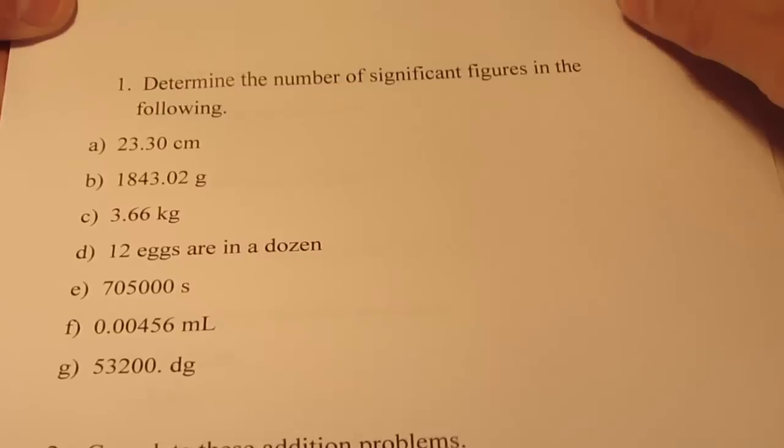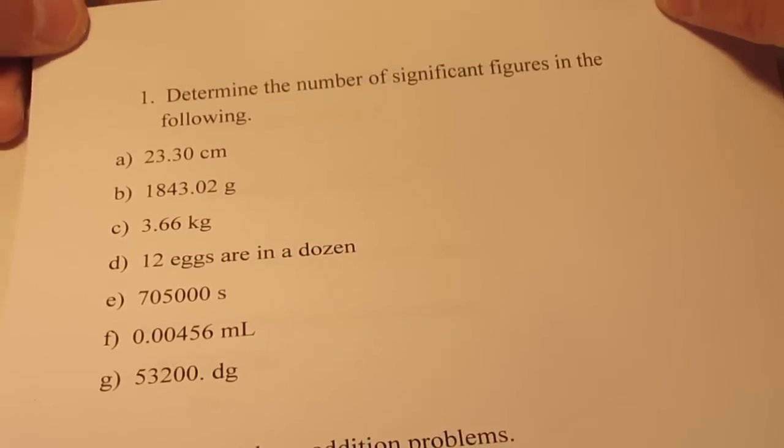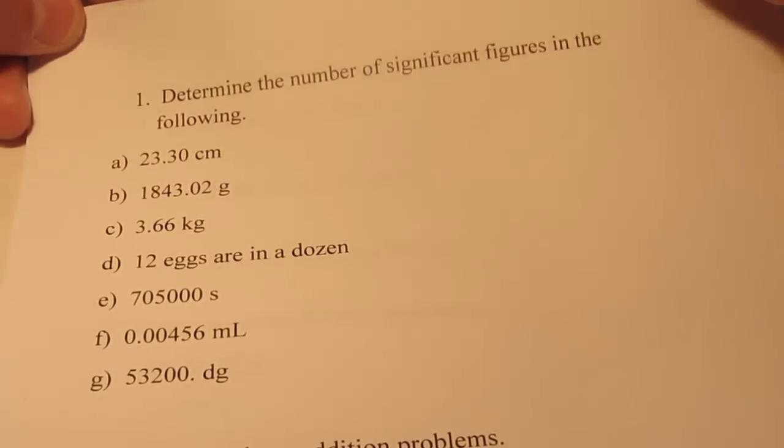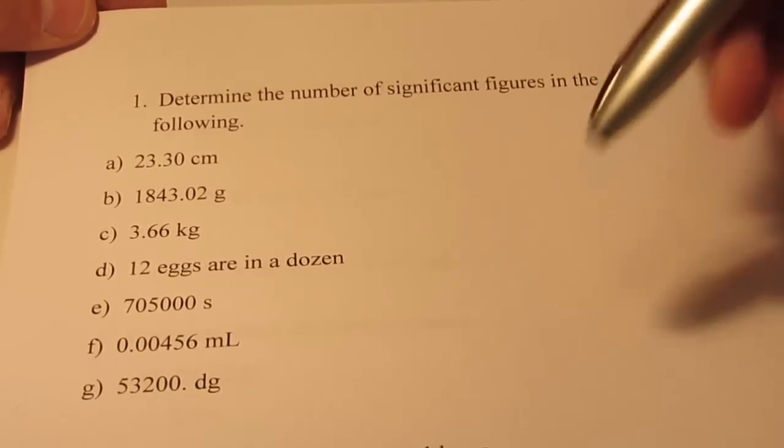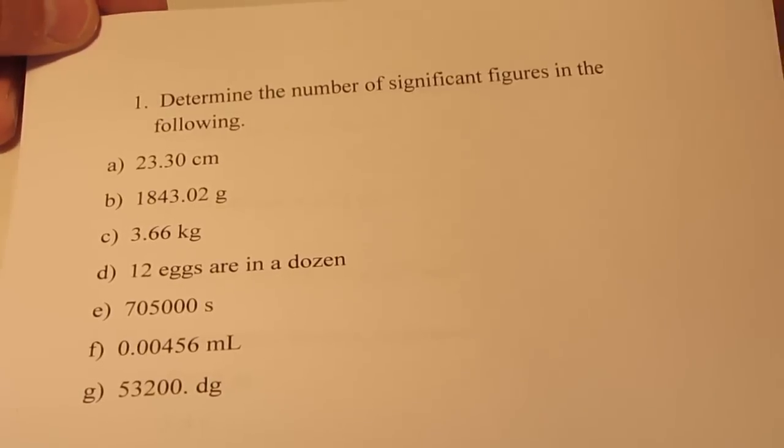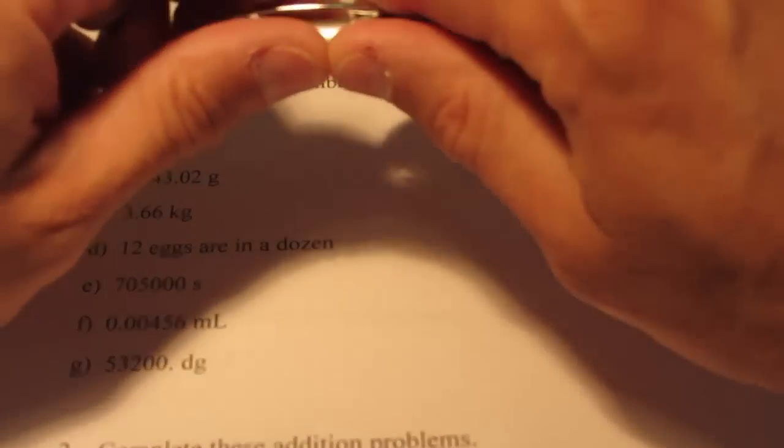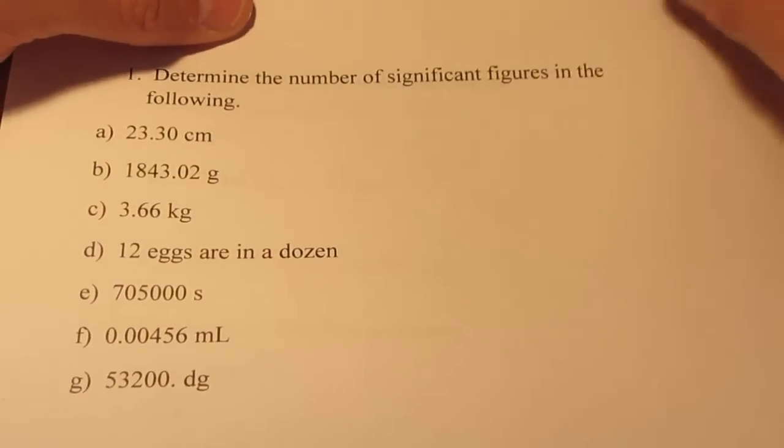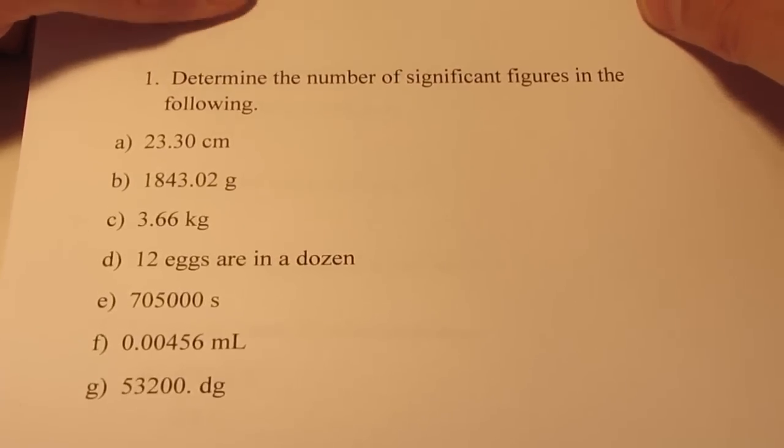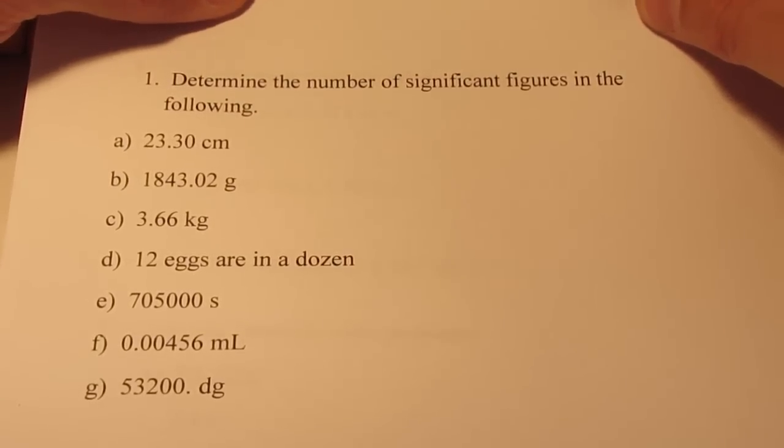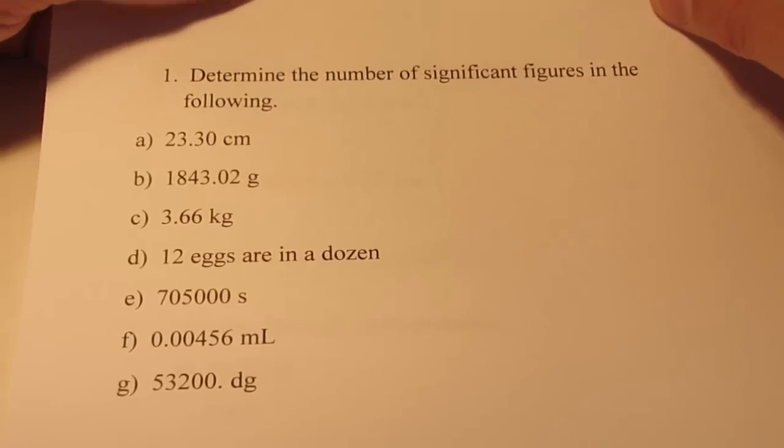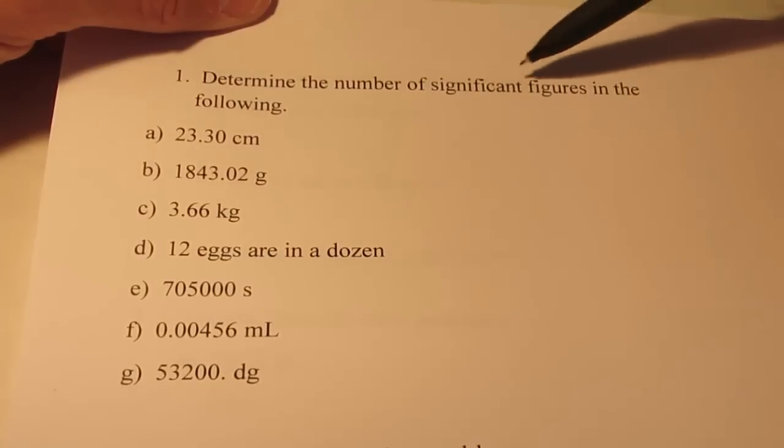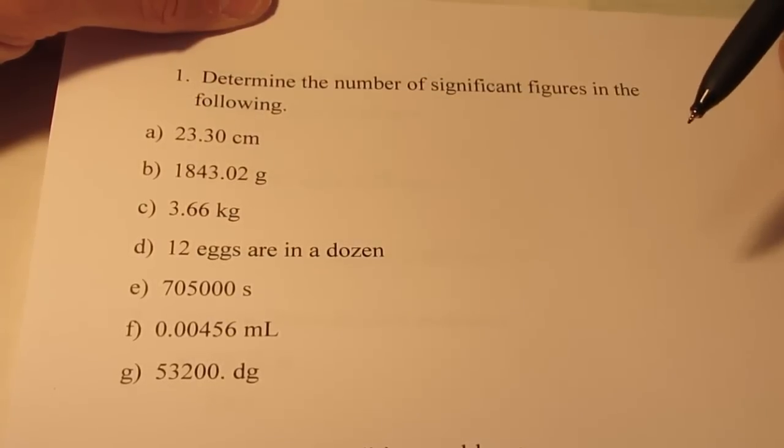Okay, as promised, we're going to work a few problems and do a few examples with regards to significant figures and calculations that involve rounding off to the appropriate numbers and significant figures. If you need to, you might want to go back and review your notes from the last two discussions with regards to significant figures. If you've already done that, let's just plow on through this and see how well you do. Let's take a look at question number one here where I'd like you to determine the number of sig figs in each of the following measurements.